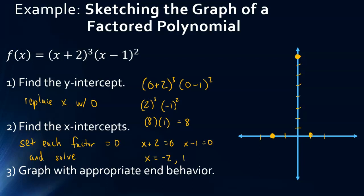For the end behavior, we don't have to expand all this out. But remember, x plus 2 times x plus 2 times x plus 2 would give us an x-cubed term. And x minus 1 times x minus 1 would give us an x-squared term. So the largest term would be x-cubed times x-squared, which gives us x to the fifth. So if we were to multiply that whole expression together, our leading term would be x to the fifth.